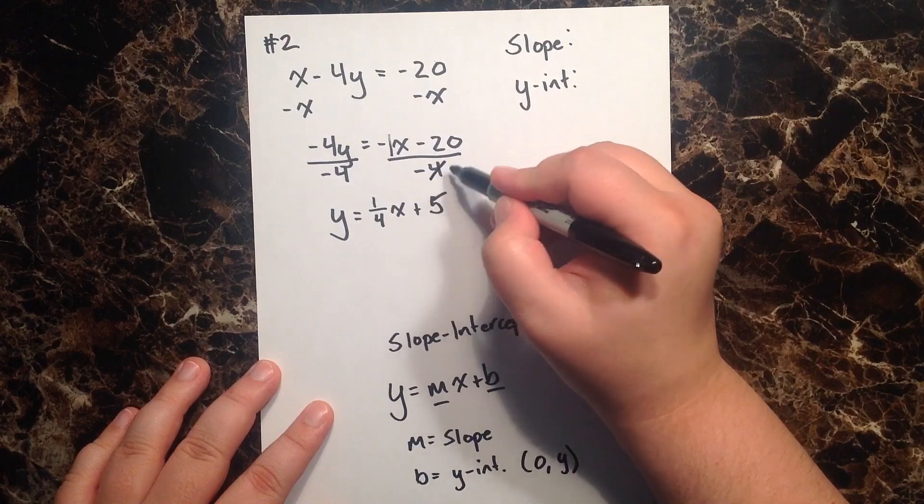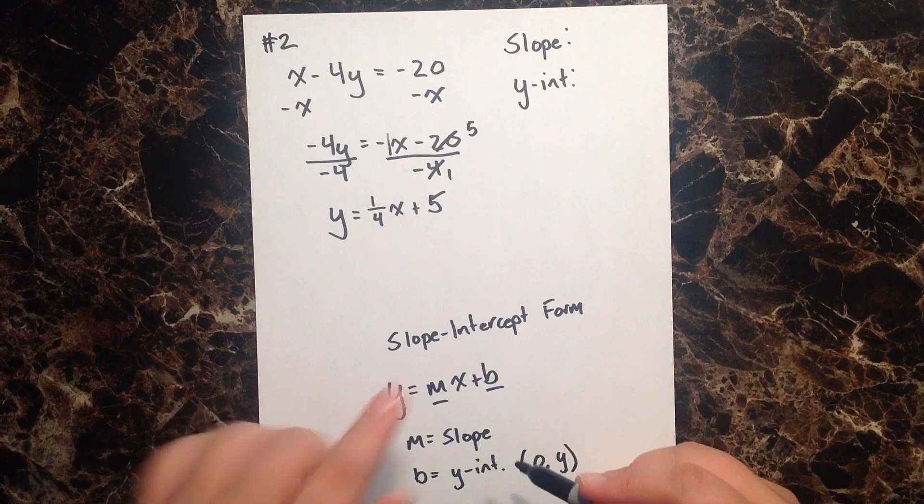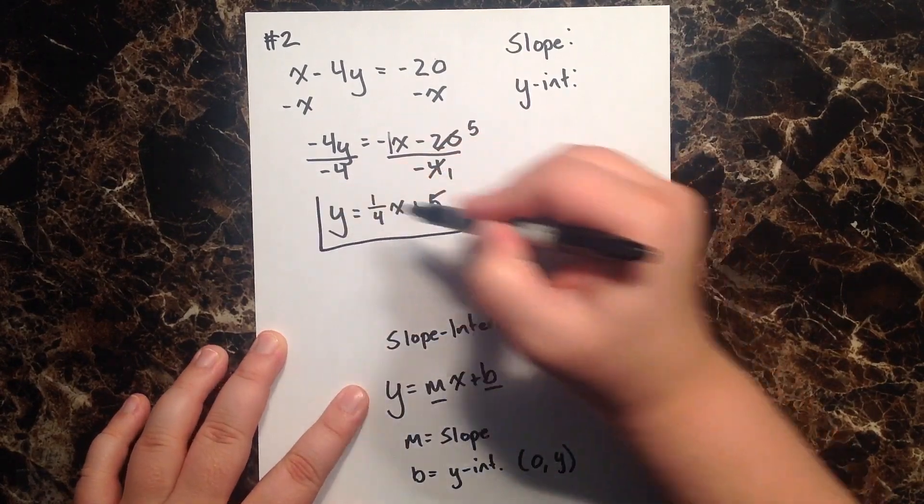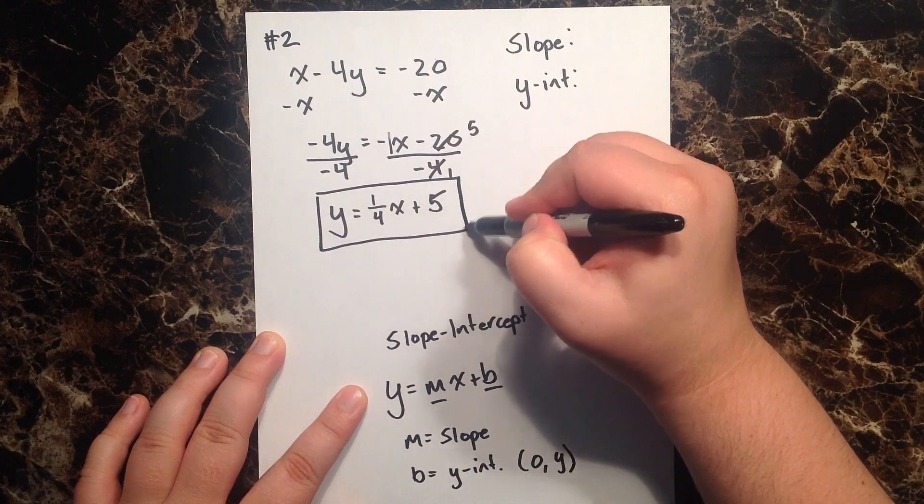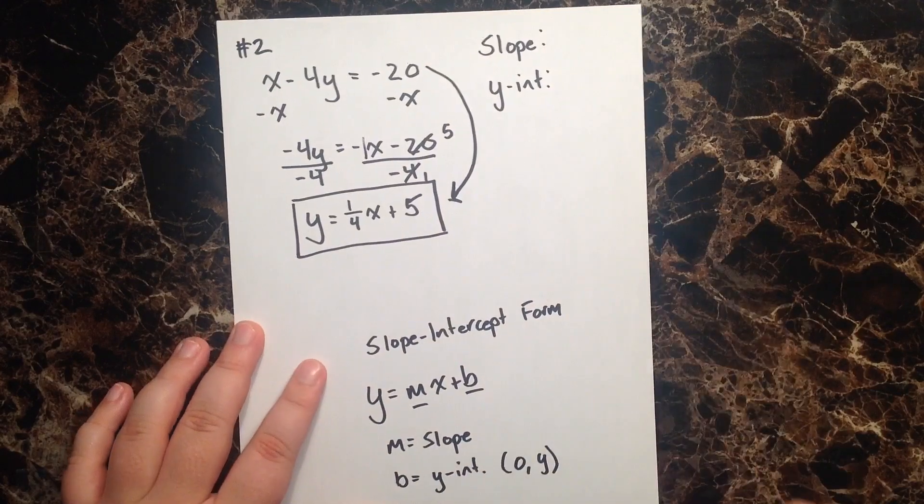4 goes into itself once, 4 goes into 20 five times, and so 5 over 1 is simply a 5,